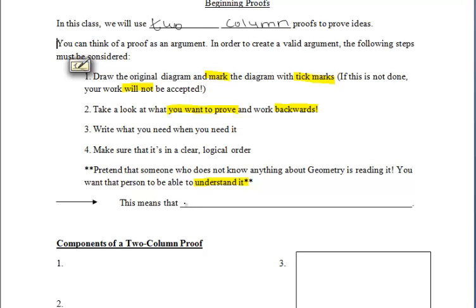In order to do so, this means that you have to write everything down. Even if it seems unnecessary or obvious to you, everything must be written in order for you to receive full credit on a proof.